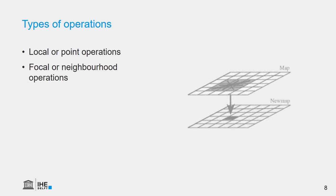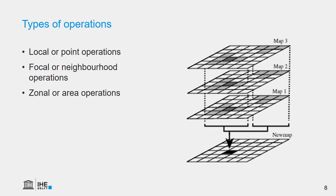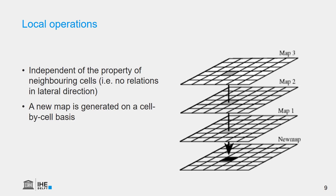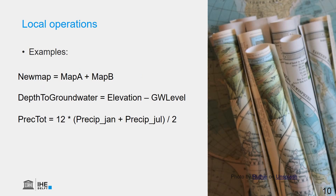In map algebra, we have different types of operations. There are local or point operations, focal or neighborhood operations, zonal or area operations, and global or map operations. Local operations are map algebra operations that are independent of neighboring cells — they are evaluated cell by cell, like the example of the multiplication. The result map is then the result of the calculation for each specific location. Examples include simple mathematical operations like adding two maps, or a hydrology-related example: calculating depth to groundwater by subtracting the groundwater level from the surface elevation raster. We can also do unit conversions in this way.